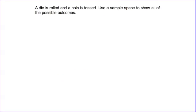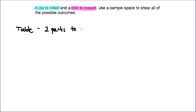The second example states that a die is rolled and a coin is tossed. Use a sample space to show all the possible outcomes. The first thing to notice is that we actually have two parts to our event: the action of a die being rolled and the action of a coin being tossed. Because we have two parts, we're going to make use of a table instead. A table works really well as a sample space if you have two parts to an event.